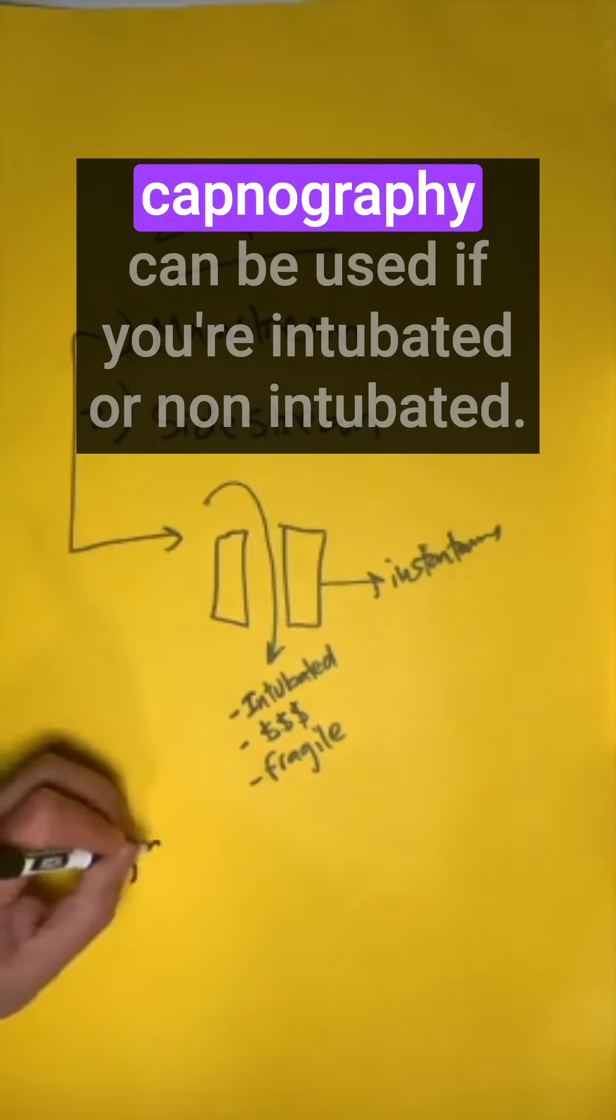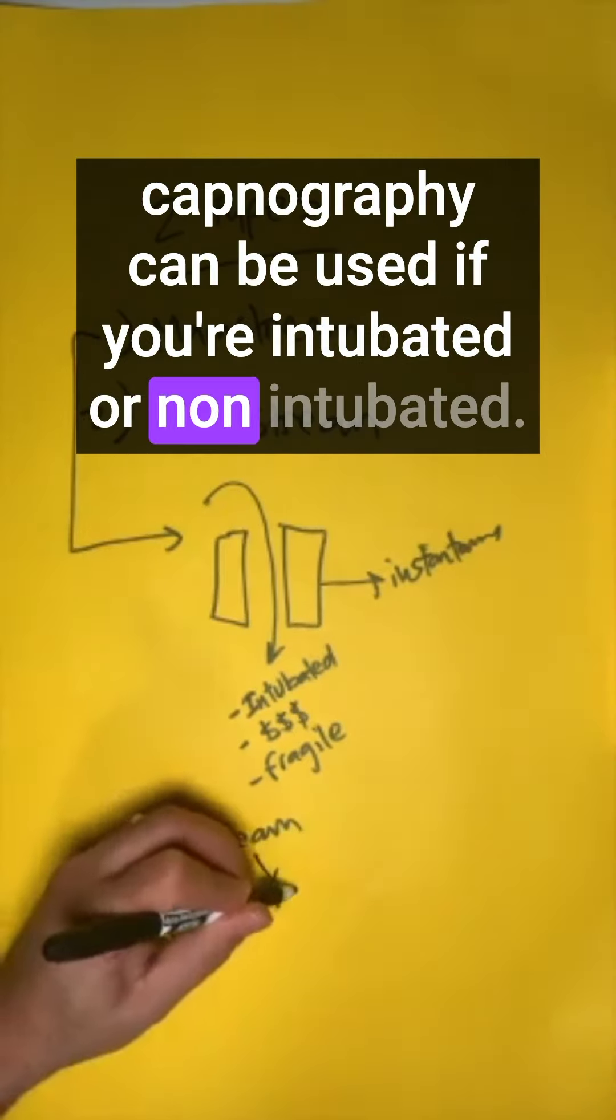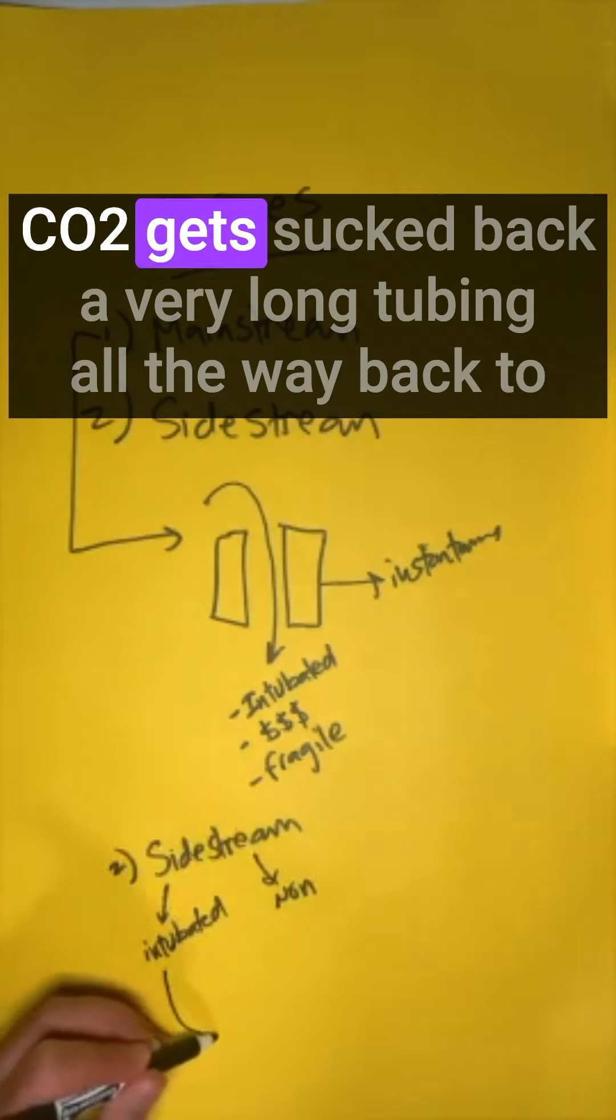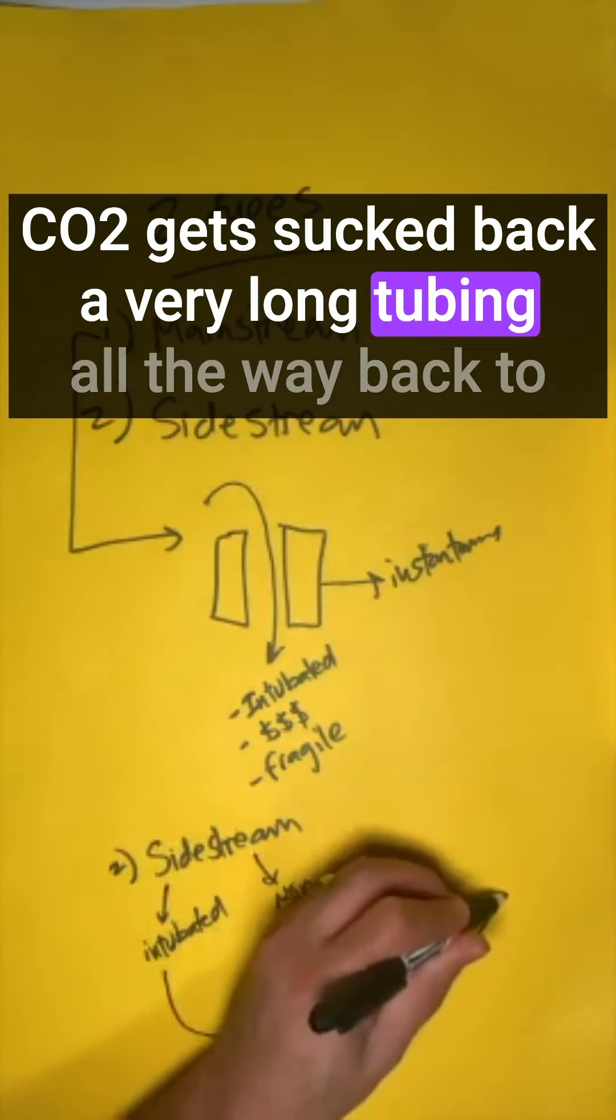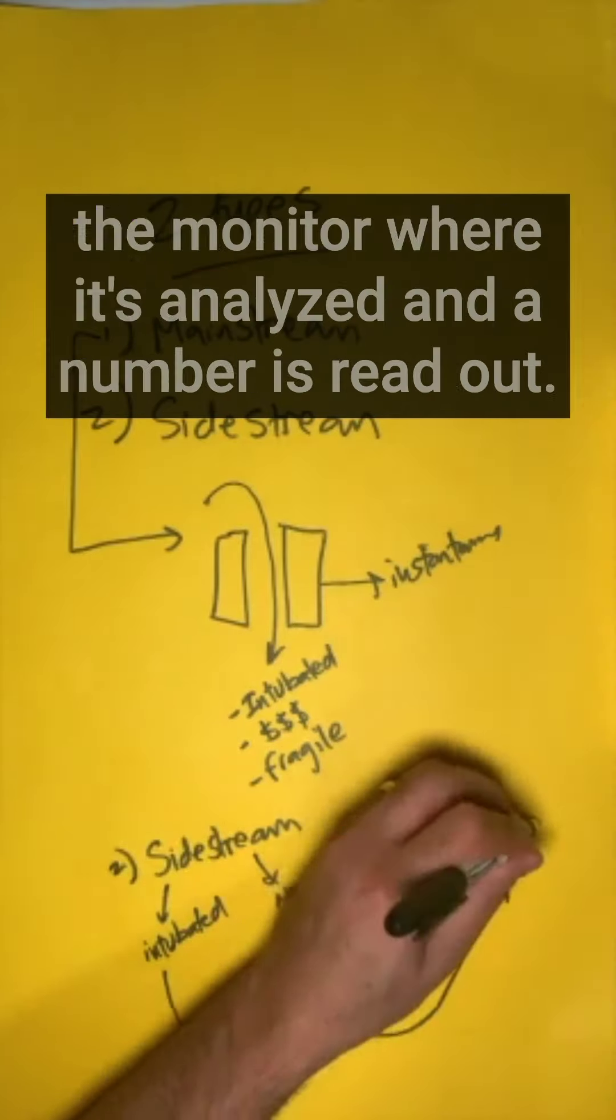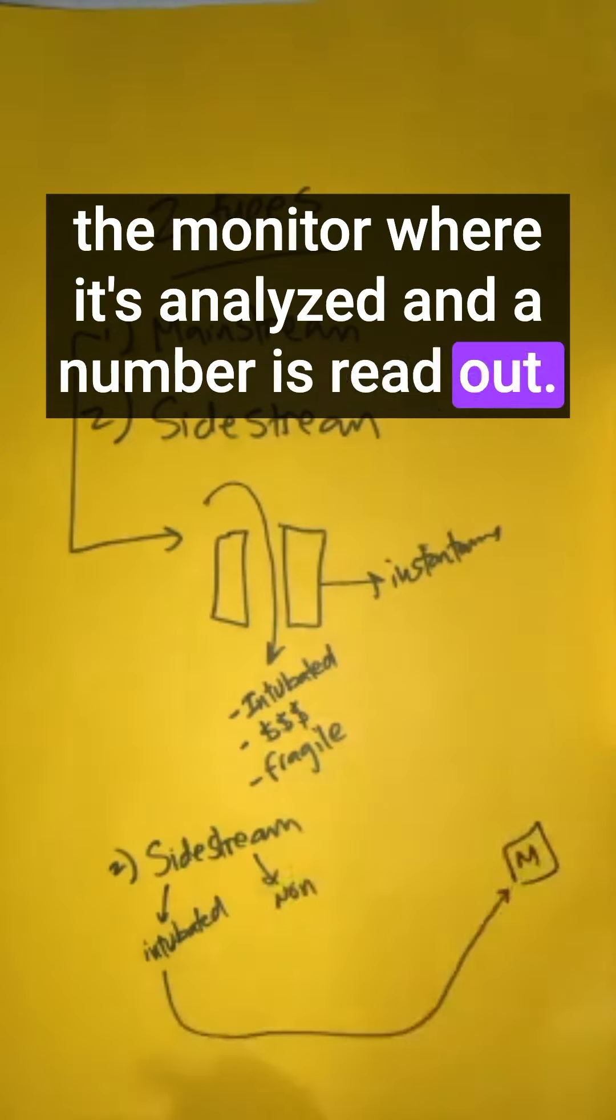Sidestream capnography can be used whether you're intubated or non-intubated. CO2 gets sucked back through very long tubing all the way to the monitor where it's analyzed and a number is read out.